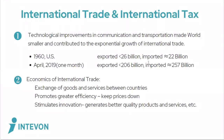So firstly, international trade and international tax. I believe everybody feels the impact of international trade in their daily life. If you look at the numbers: in 1960, the United States exported less than 26 billion and imported about 22 billion of goods and services the whole year. In just one month in 2020, the US exported less than 206 billion and imported about 257 billion of goods and services.